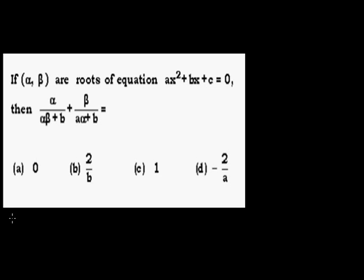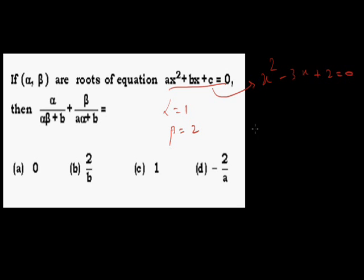Alpha and beta are roots of Ax² + bx + c = 0. We can assume values: let alpha = 1 and beta = 2. Then the equation becomes x² - 3x + 2 = 0, which means A = 1, B = -3, and C = 2. Now I know all values of A, B, C, alpha, and beta.